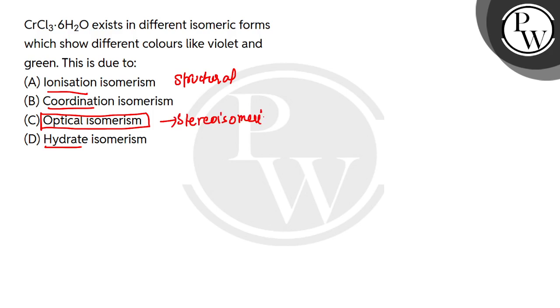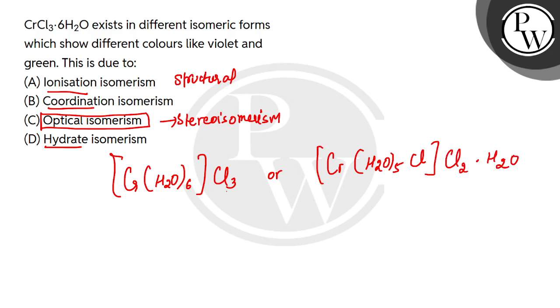Here you see the complex chromium. If you arrange it, you can use it to make a complex. This can be done with Cr and all Cls as an ion present. Another possibility is chromium with H₂O, let's say 5, and 1 Cl, and 2 Cls are coming out and 1 hydrate.